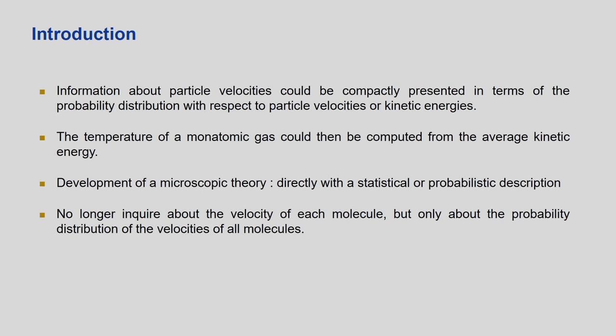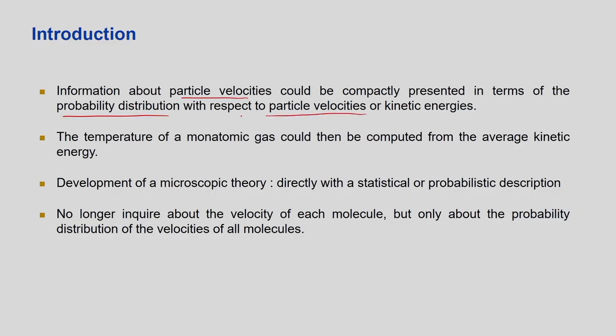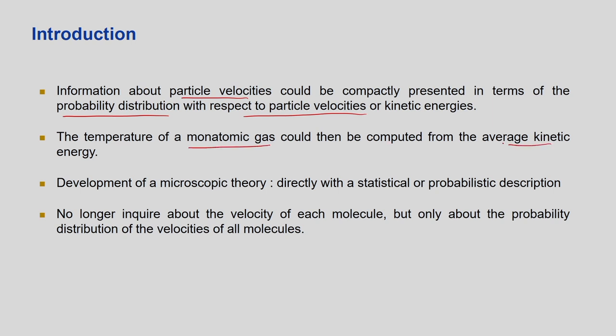The information about particle velocities can be compactly presented in terms of a probability distribution. Probability distribution is a mathematical function that can describe the velocities — what fraction of molecules have a certain velocity, and what fraction have another. We have a distribution of velocities instead of each individual molecule's velocity. If we know the velocity distribution, we can compute temperature, since velocity and temperature are related. For a monoatomic gas, temperature can be computed from the average kinetic energy.